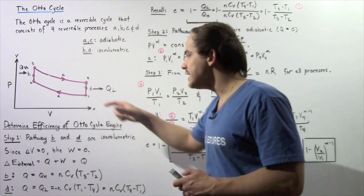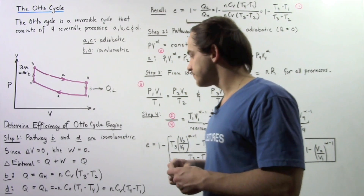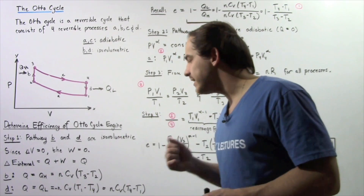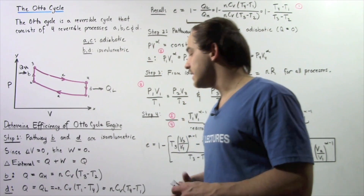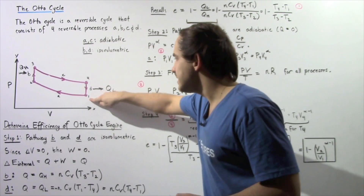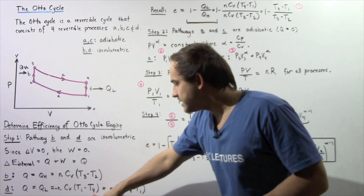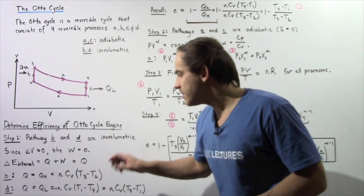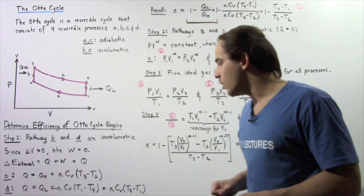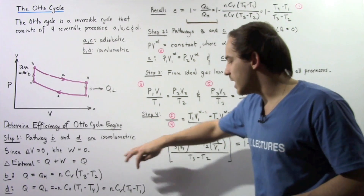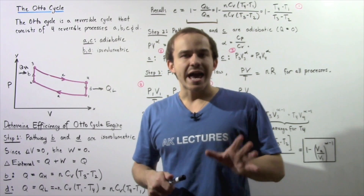In process D, heat flows out of our system, so Q must be negative. QL equals negative N multiplied by Cv multiplied by T1 minus T4. Rearranging to eliminate the negative sign gives QL equal to N multiplied by Cv multiplied by T4 minus T1. So now we have equations for both QH and QL.